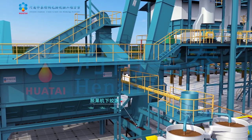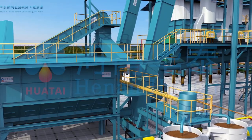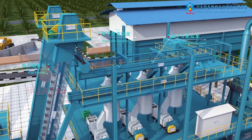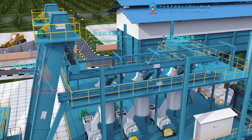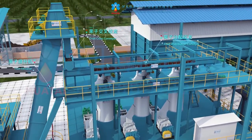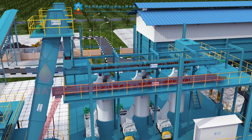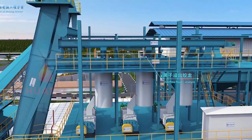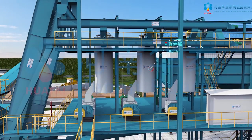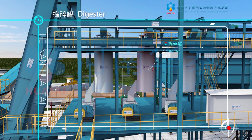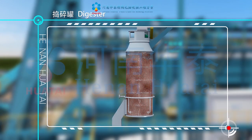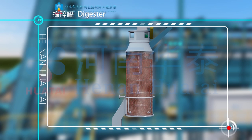Fruits are conveyed to the fruit elevator from the conveyor under the thresher, elevated to the fruit cross conveyor, and transferred to the fruit distribution conveyor. Redundant fruits are recycled by the overflow fruit conveyor. Fruits then enter every digester, where they are heated and digested.